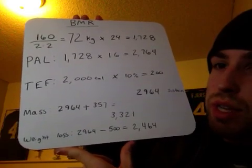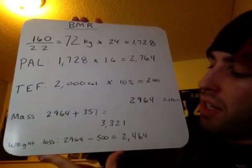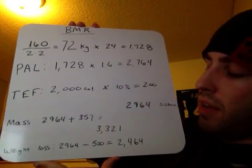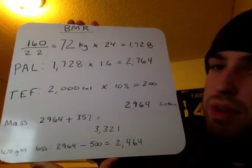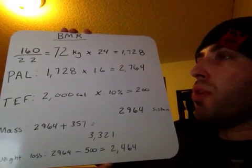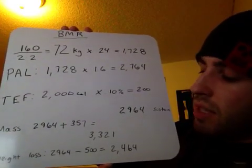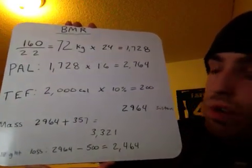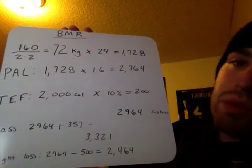And if you're trying to lose weight, that bottom example there, you take that 2,964 calorie count and minus it by 500 because it takes 3,500 calories to burn one pound of fat. And then it's going to give you 2,464 calories to lose one pound of fat a week.